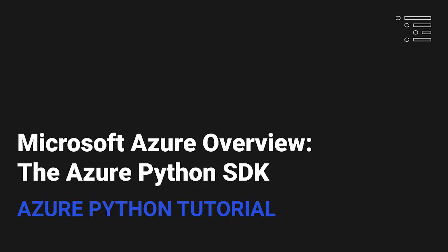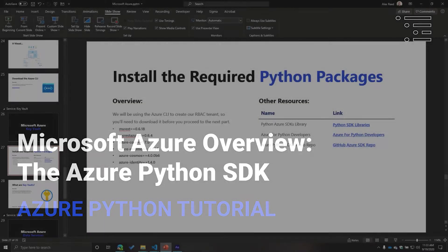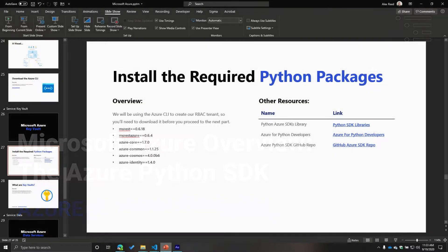Welcome back to video five of this weird series. In the previous video, we walked through the process of using the Azure CLI to create a service principal with role-based access control. So now that we've created our service principal, we're going to be leveraging it inside of the Azure Python SDK to access a resource.